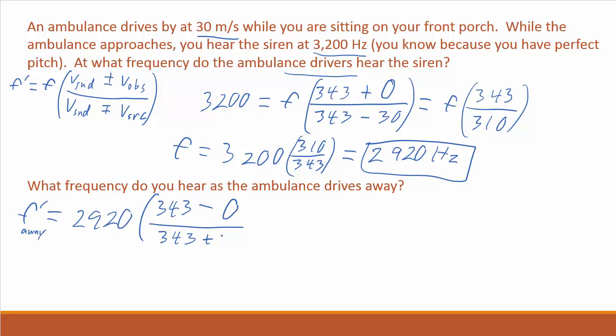Again, your velocity is zero, and the velocity of the ambulance is 30, so 2920, 343, and 373, and you throw that in your calculator, and you get 2685.